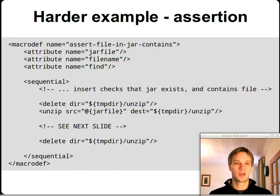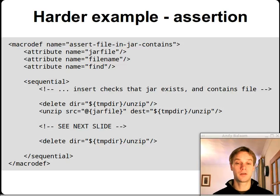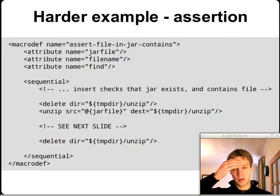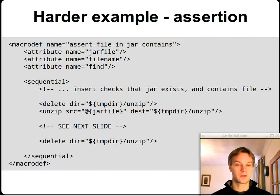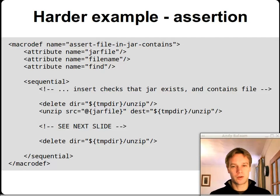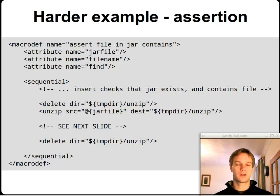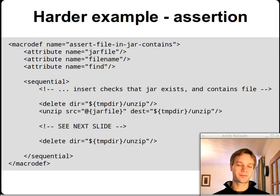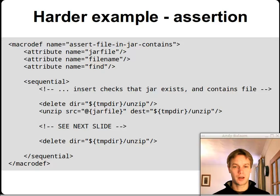The assertion assert-file-in-jar-contains takes three attributes: the name of the JAR file, the file name to look for within the JAR, and the text to find. We check the JAR file really exists (if not we fail), and check it contains the file we're looking for (if not we fail). Then we delete a temporary directory, unzip the JAR file into that temporary directory — I looked for a way without a temp directory but it didn't work — and at the end we delete the temporary directory again. In between there's some magic on the next slide.